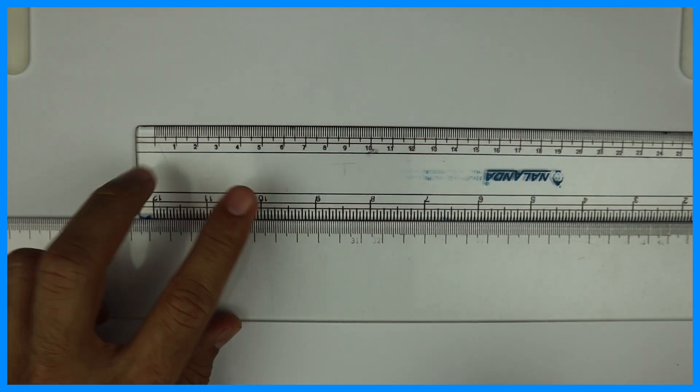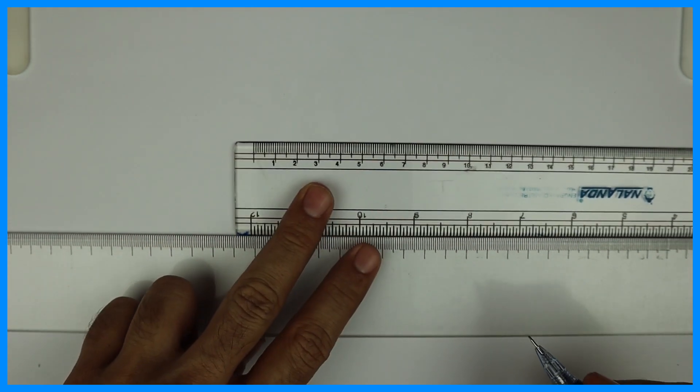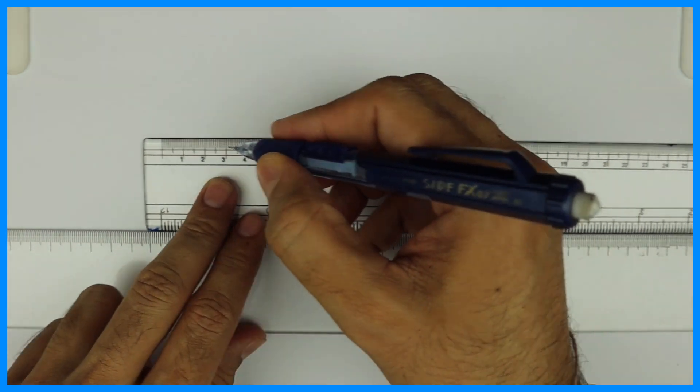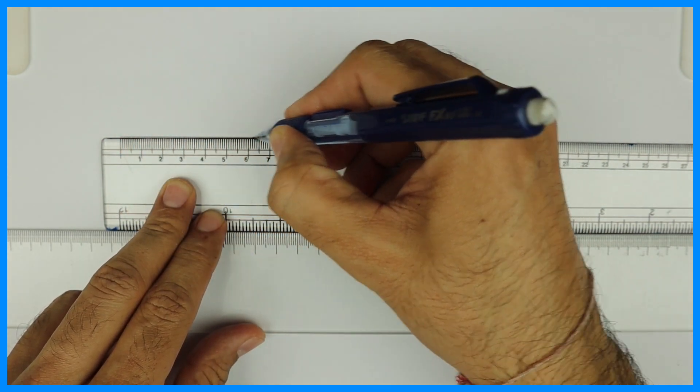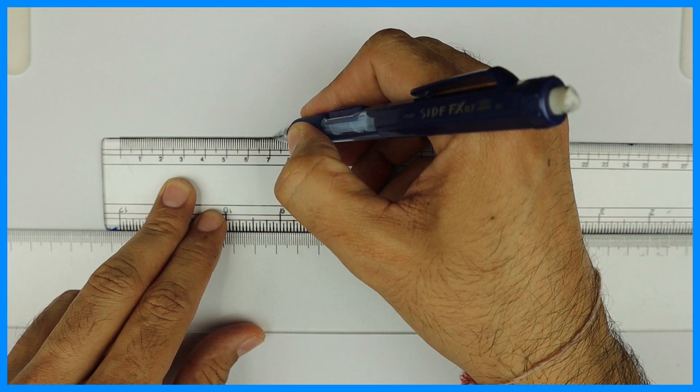So first we'll start with line AB. I will draw line AB 70 mm long. So you can take 70 mm with your scale.